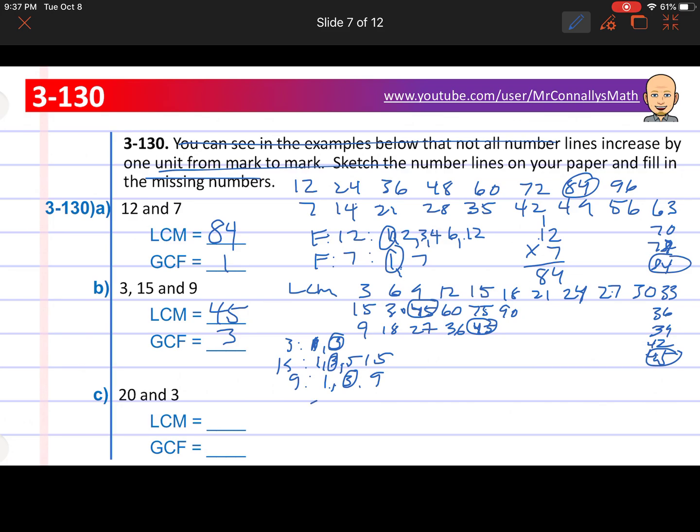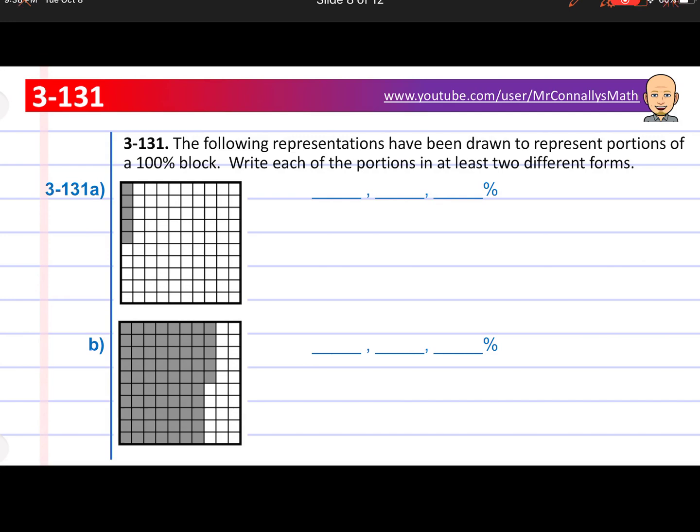So then follow that pattern for the 20s and 3. Count by 20s and 3s. Find the least common multiple, put it there. And then for GCF, you just do the multiples of 20 and 3. 3 is easy. That's 1 and 3. And 20 is 1 and 20. What would be 2 and 10? And then there's some more in the middle. Figure out which one's the bigger of all those. And put it right here. Pause if you need more time. I'm assuming you're done. And away we go.